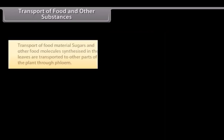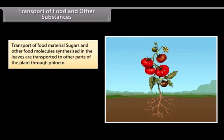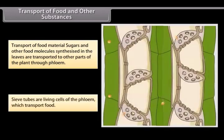Transport of food and other substances. Transport of food material, sugars and other food molecules synthesized in the leaves are transported to other parts of the plant through phloem. Sieve tubes are living cells of the phloem which transport food.